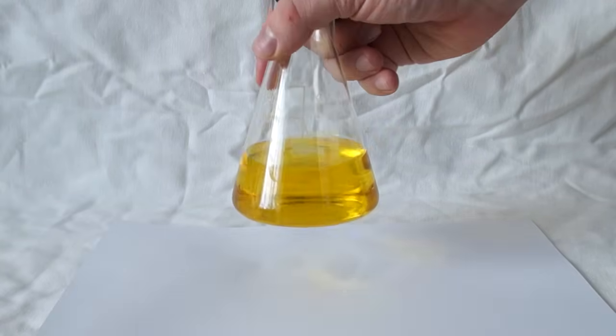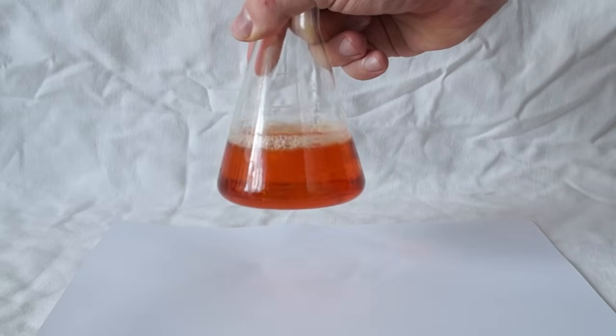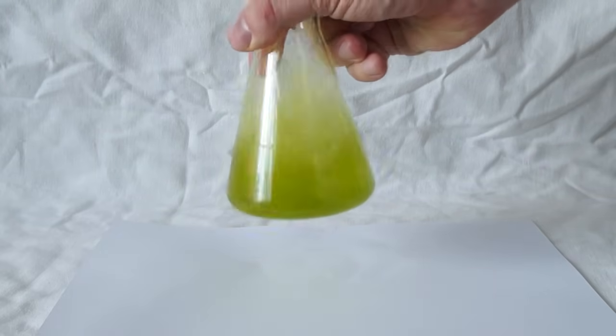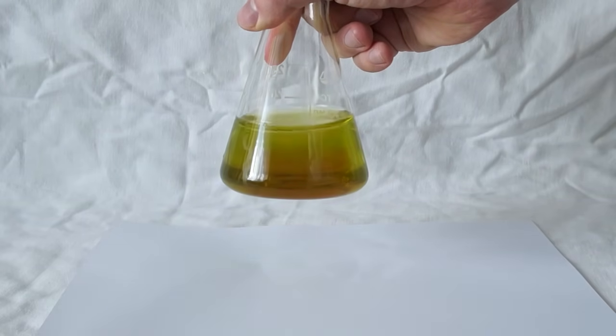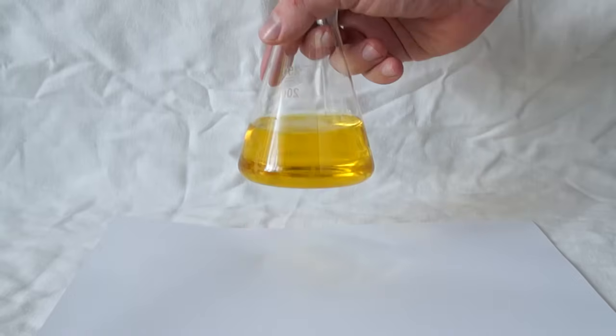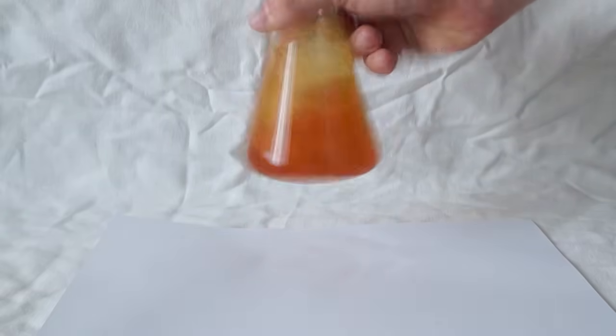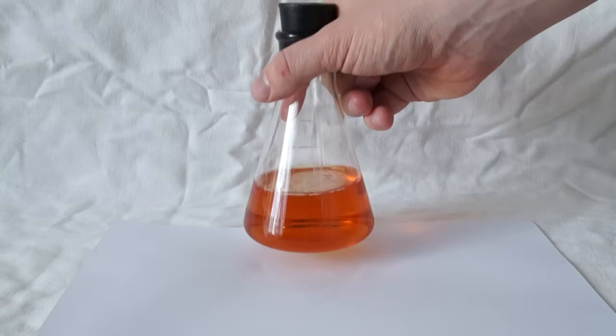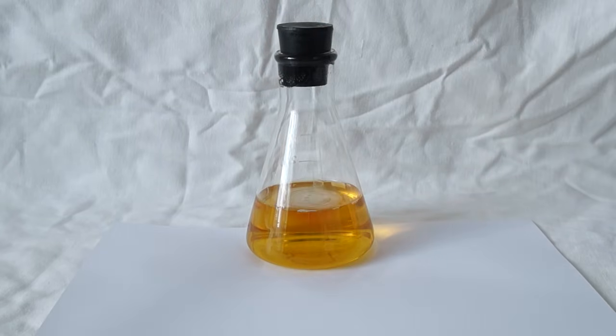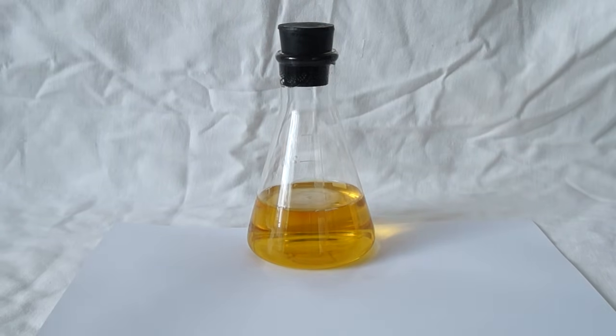So why does the solution change color when agitated? It's because of the fact that our air contains 21% oxygen. While shaking, the indicator solution is oxidized by the atmospheric oxygen. Glucose, which is a reducing agent, changes back the color of the solution to yellow.